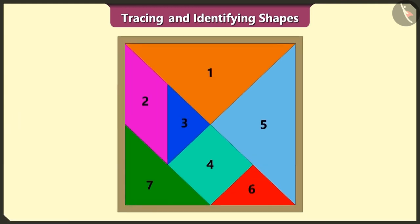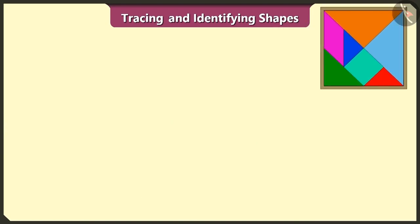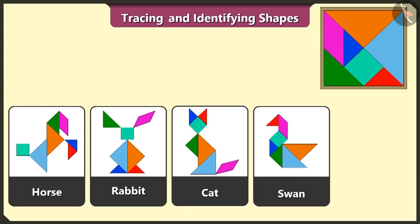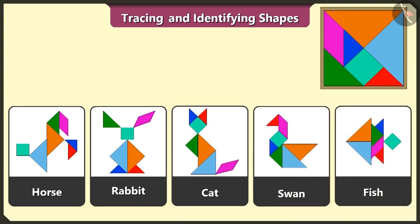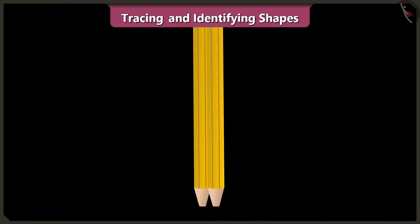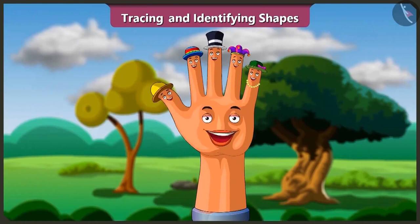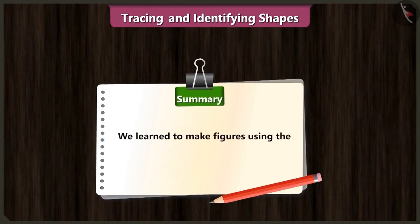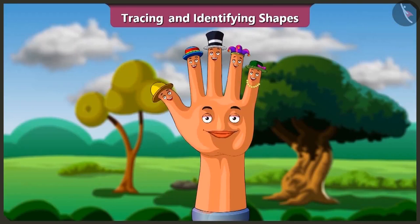We have finally created a horse, rabbit, cat, swan and a fish using the 7 shapes of the tangram. Friends, today we learned to make figures using shapes of a tangram in an interesting way. In the next video, we will know about lines and their different types. So, let's watch.